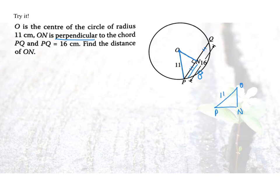Radius is 11, 90 degrees, and PN is 8. Find the distance ON. How do we find this distance? It's a right angle triangle. What can we use? We can use the Pythagoras theorem. So ON will be equal to square root radius squared minus 8 squared.